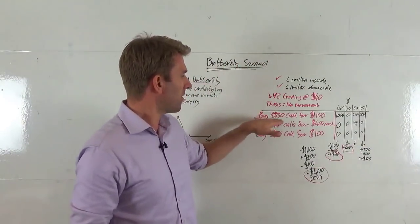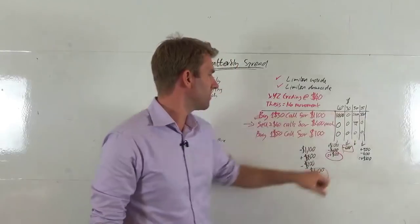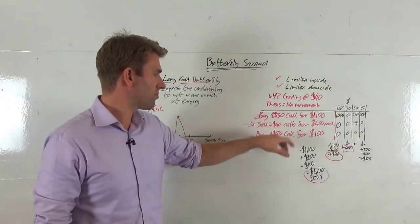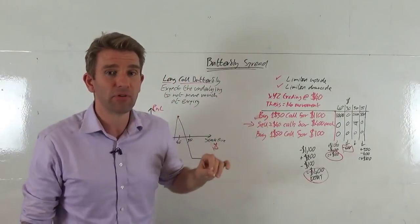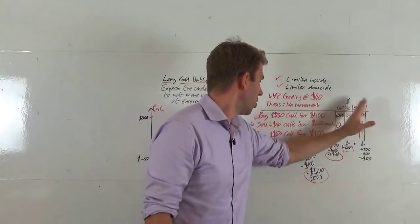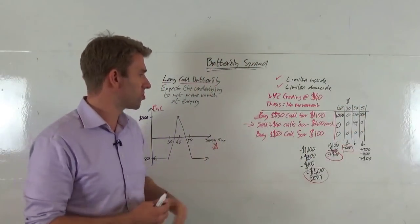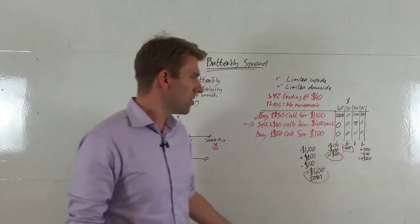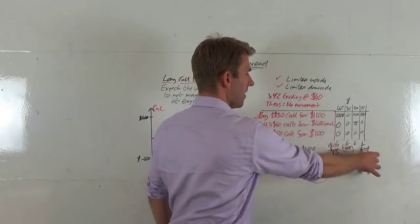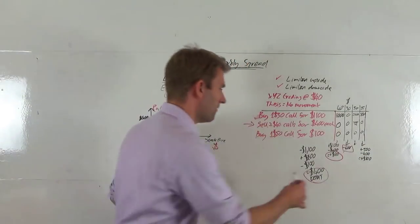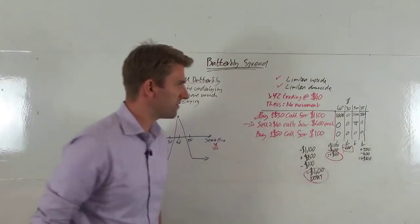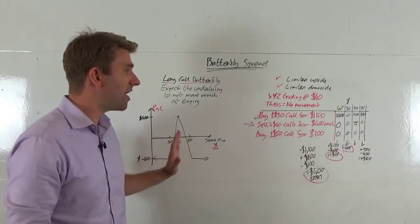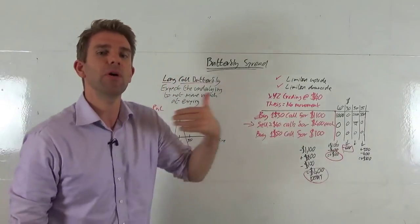What if it expires somewhere in the middle, say $35? The $30 call has $500 of value, the $40 call has no intrinsic value because expiry is below the strike price, and the $50 call is also zero. So we made $500 on the trade, but it cost us $400 to enter. Working it all out, we've made $100. So at $35 we start to make something — and it's symmetrical to the downside as well.